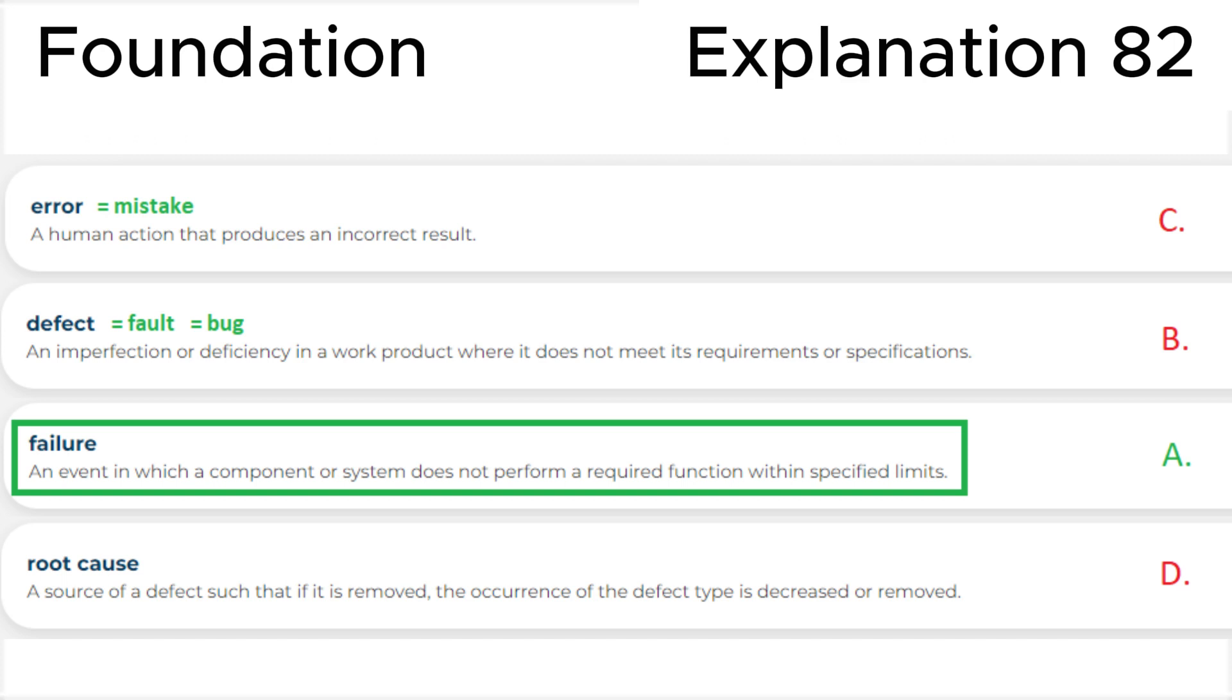Defect, or fault, or bug, is an imperfection or deficiency in a work product where it does not meet its requirements or specifications. Error, or mistake, is a human action that produces an incorrect result. Root cause is a source of a defect such that if it is removed, the occurrence of the defect type is decreased or removed.